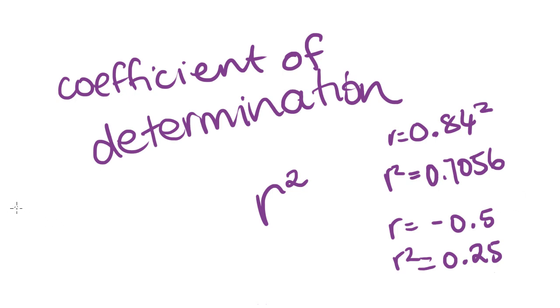So because r can only be between negative 1 and positive 1, and when we square one of the negatives that will become positive, and if we square one of the positives that will stay positive, we're only going to get positive answers for r squared.